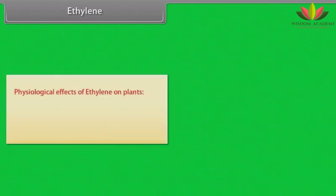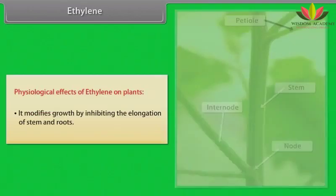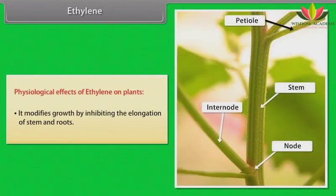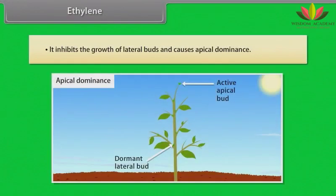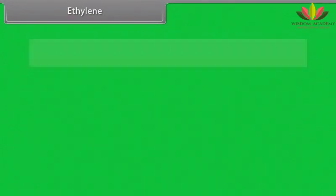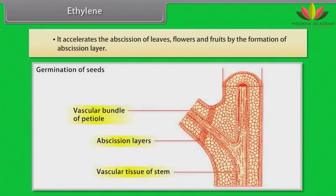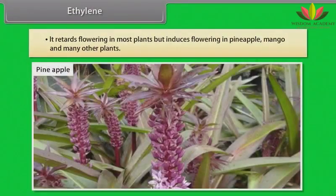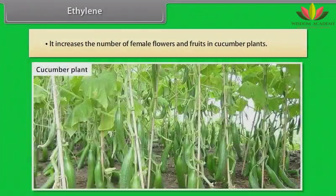Physiological effects of ethylene on plants: it modifies growth by inhibiting the elongation of stem and roots. It inhibits the growth of lateral buds and causes apical dominance. It accelerates the abscission of leaves, flowers and fruits by formation of the abscission layer. It retards flowering in most plants but induces flowering in pineapple, mango and many other plants. It increases the number of female flowers and fruits in cucumber plants.